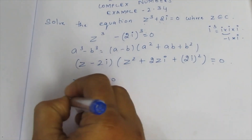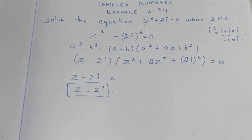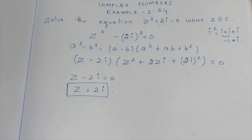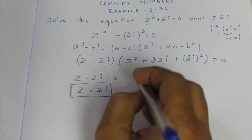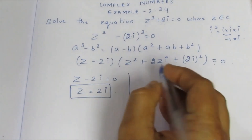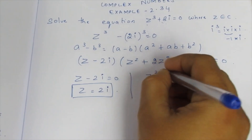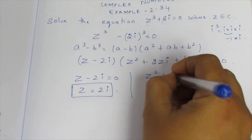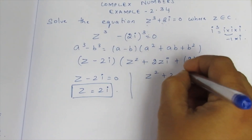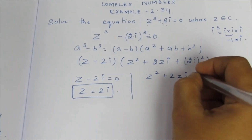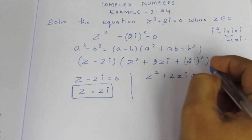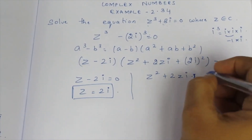Z = 2i is one value. Next, looking at the quadratic factor: Z² + 2Zi + i² where i² = -1, giving Z² + 2Zi - 1, with 2² = 4 and the constant term becoming minus 4.